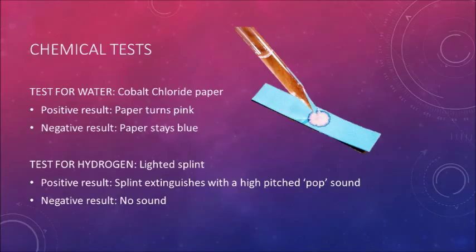We could have inserted a piece of cobalt chloride paper into the mouth of the test tube to test for water. A positive result would be that the paper turns pink. That would confirm the presence of water. However, if the paper stays blue, that would be a negative result and would show that water was not present.